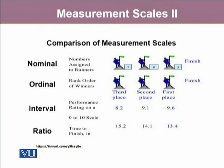Let's talk about an example of how the way we measure changes the scale of measurement. In a marathon, if three runners are running, the numbers assigned to each runner at the finish line are nominal. Having a number seven, eight, or three does not necessarily mean that the person assigned three is the fastest — it's just a name.